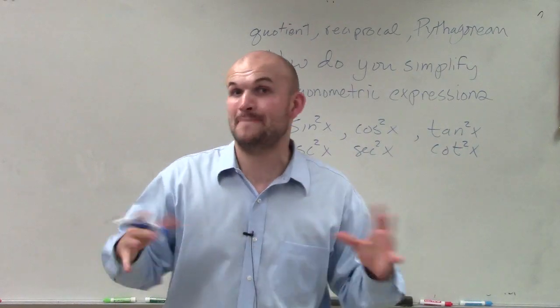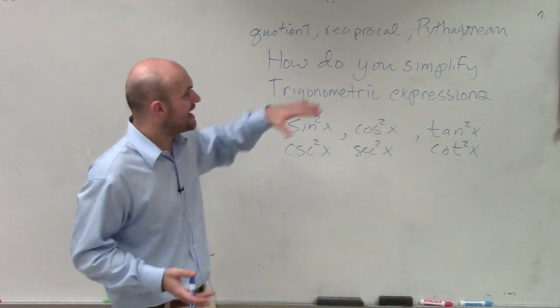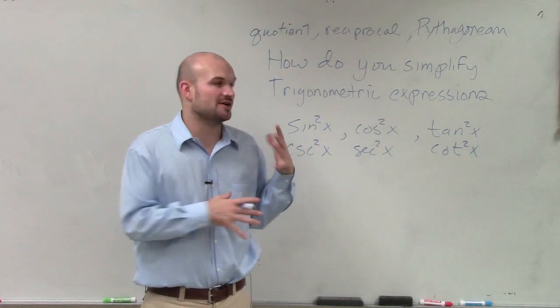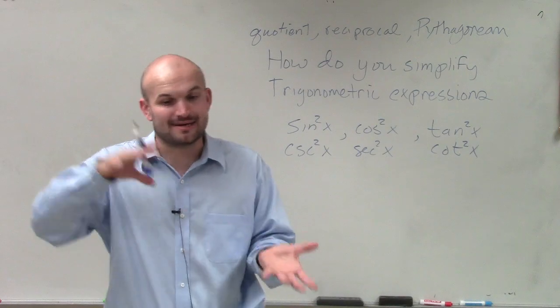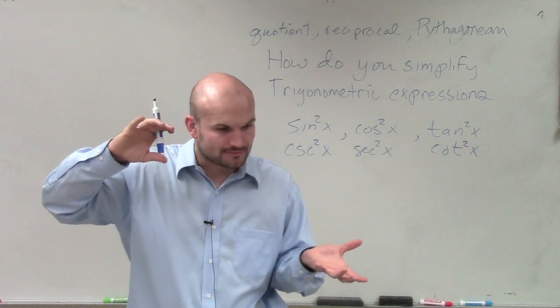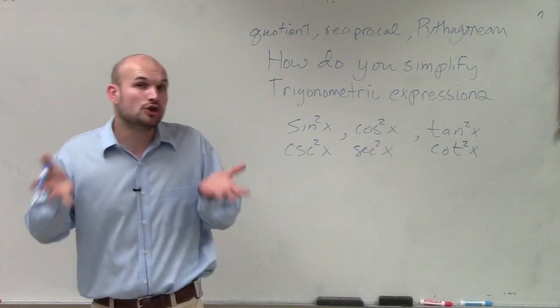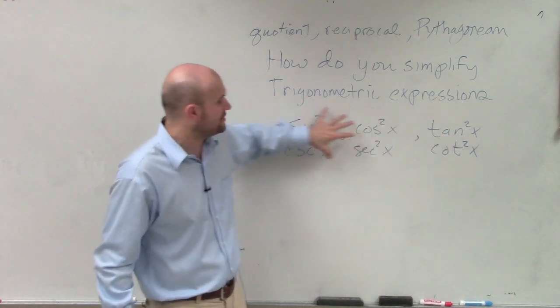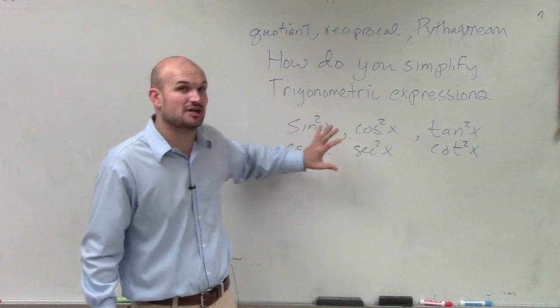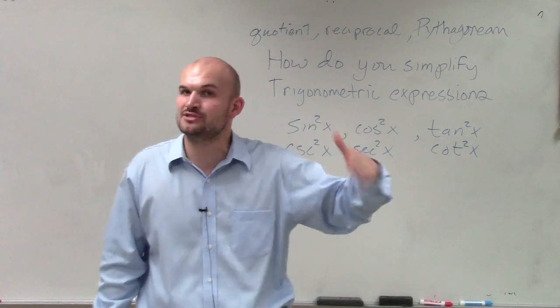Now, not always is that the best solution or the best thing to do, but a lot of the times that is going to get something moving where you're going to be able to finally simplify your expression. You're finally going to get maybe the same terms on the numerator and denominator that you can divide out. So look for those opportunities for when you have these functions that are squared. Look to try to apply your Pythagorean identities to substitute in those values.